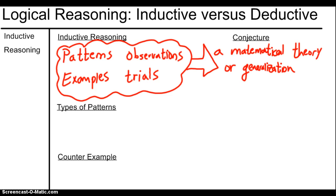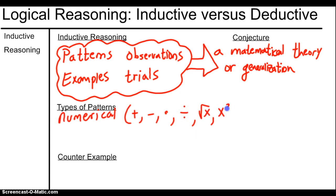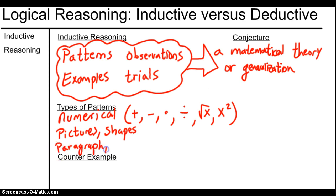What other kinds of patterns could we see for inductive reasoning? We could see numerical patterns — maybe some sort of number sequence involving addition, subtraction, multiplication, division, square roots, or exponents. We could also see patterns in pictures or shapes, patterns in a paragraph, or like we just saw with Mr. McCain, patterns could simply be real-world observations.